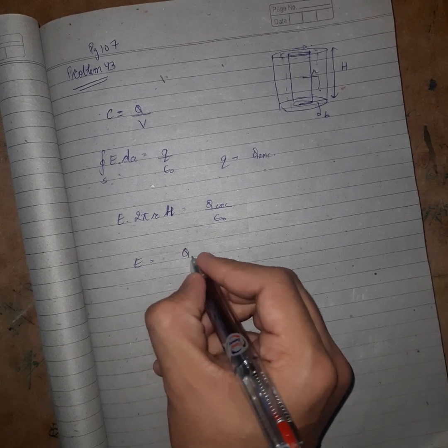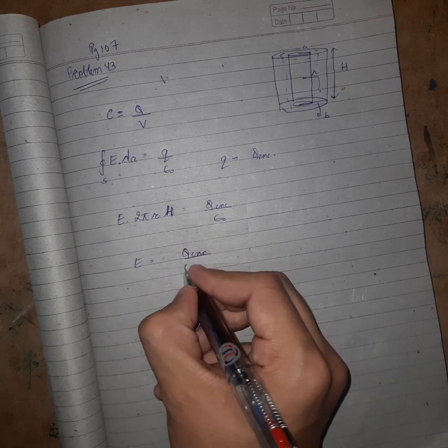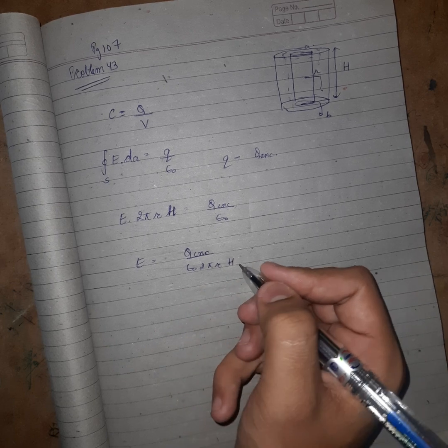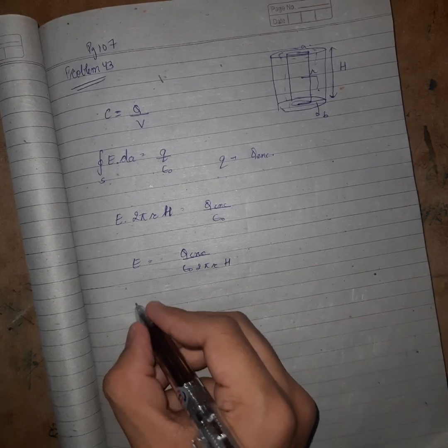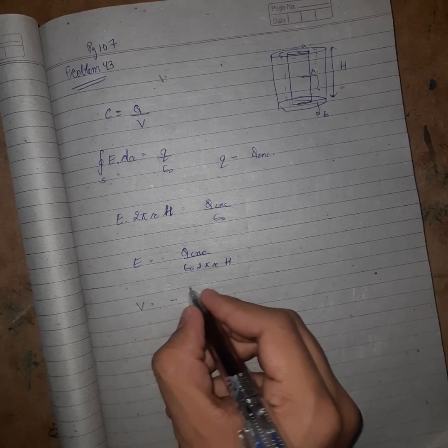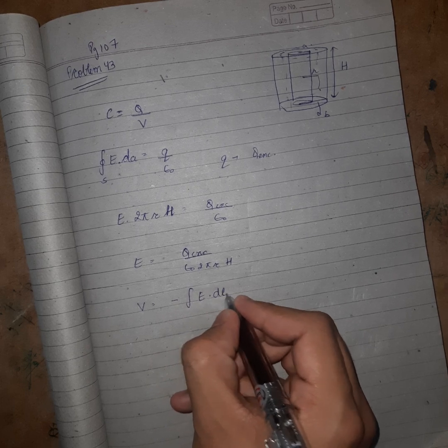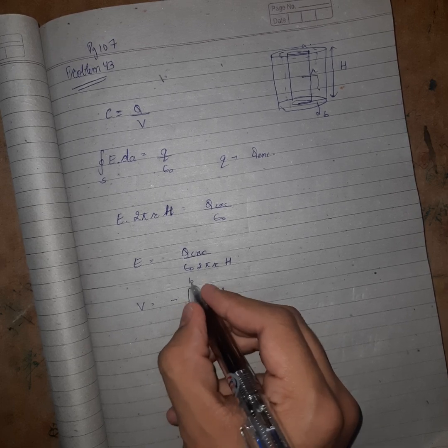Now we need V. So V is minus ∫E·dl in the limits from a to b.